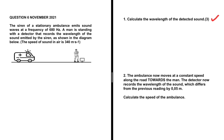Let's calculate the wavelength of the detected sound. The siren of a stationary ambulance emits sound waves at a frequency of 680 hertz. A man is standing with a detector that records the wavelength of the sound emitted by the siren, as shown in the diagram. The speed of sound in air is 340 meters per second. The question asks us to calculate the wavelength of the detected sound if the ambulance is stationary.